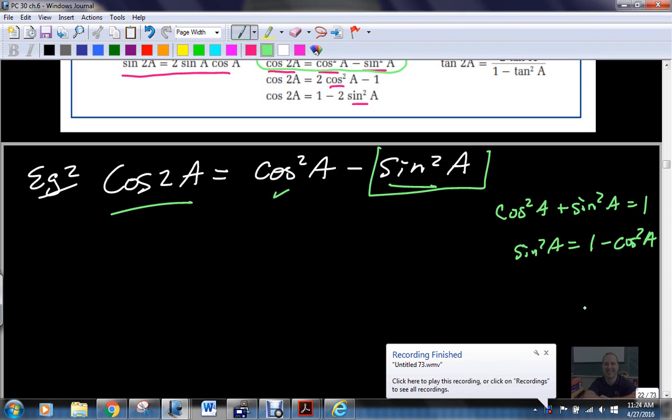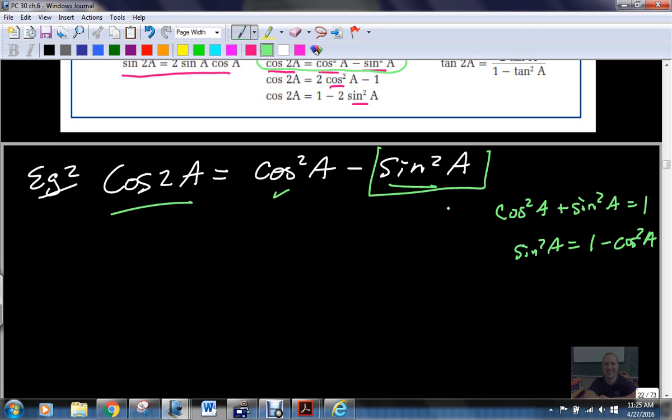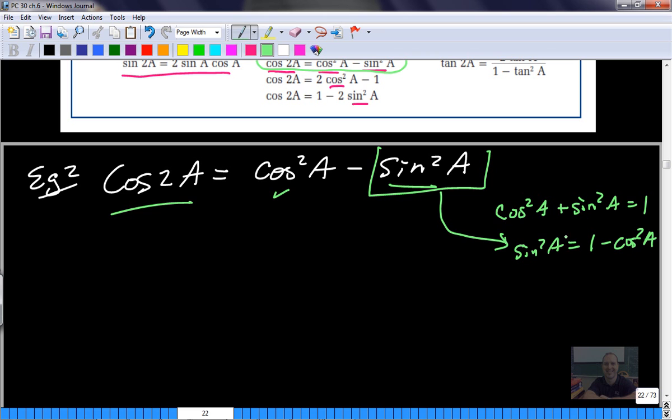Cos squared A. So if I'm writing cos of 2A in terms of cosine only, I can switch this around. See? This actually equals this.